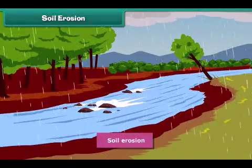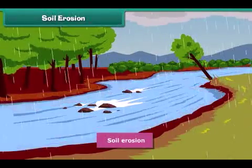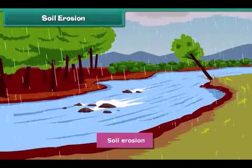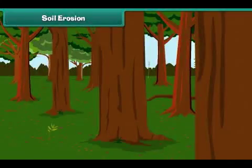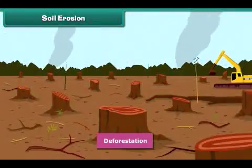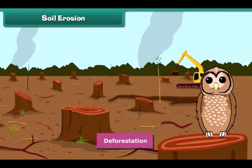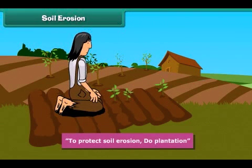Do you know what soil erosion is? Sometimes the soil is carried away by wind and water — this is called soil erosion. You will be surprised to know that cutting of trees also causes soil erosion. Soil erosion makes the soil infertile. We can protect against soil erosion by planting more and more trees.